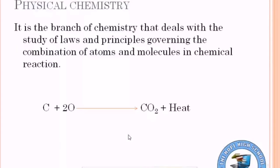Physical chemistry is the branch of chemistry that deals with the study of laws and principles governing the combination of atoms and molecules in a chemical reaction. In Urdu: Physical chemistry, chemistry کی ایسی شاخ ہے جس میں ہم ان قانون اور قاعدوں کی study کرتے ہیں جو chemical reaction کے بارے میں بتاتے ہیں۔